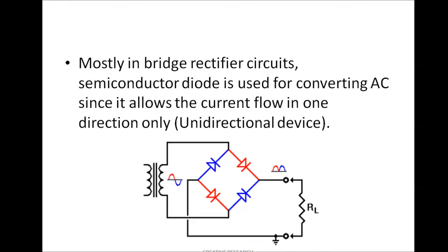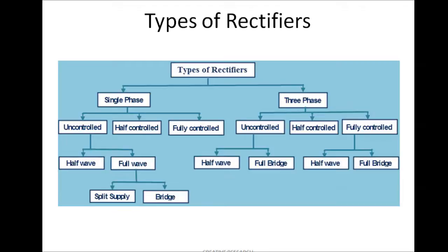Rectifiers vary depending upon the AC input voltage. We have two different AC voltages: single phase and three phase. In single phase, if the input is single phase, the rectifier converts that to DC. If the input is three phase, the rectifier also converts that to DC. Single phase rectifiers are divided into three categories: uncontrolled, half controlled, and fully controlled. Uncontrolled is also divided into half wave and full wave, and full wave is divided into split or bridge rectifier.